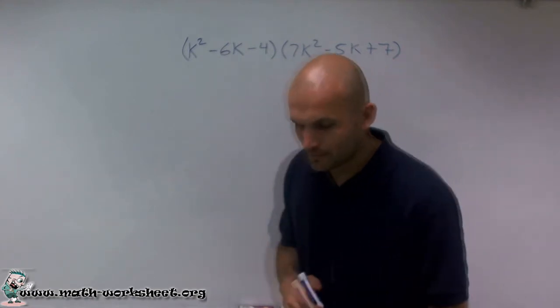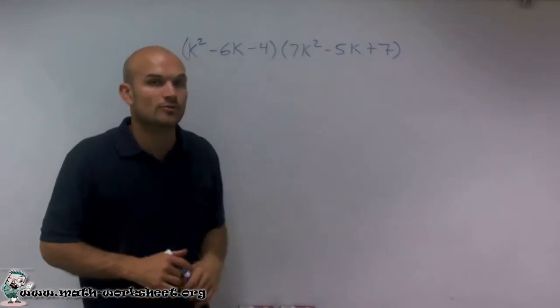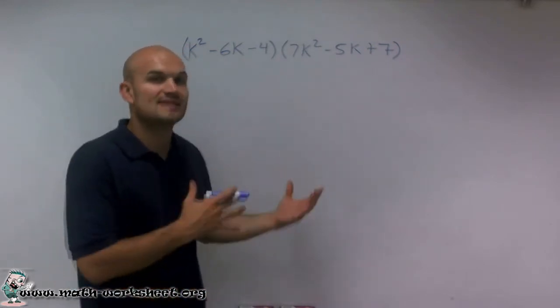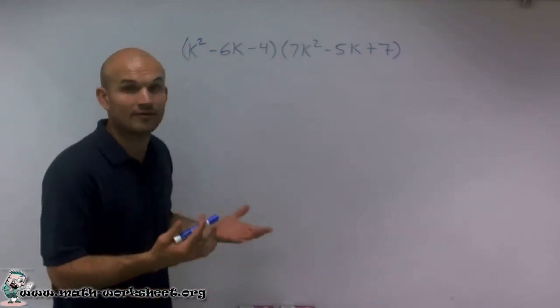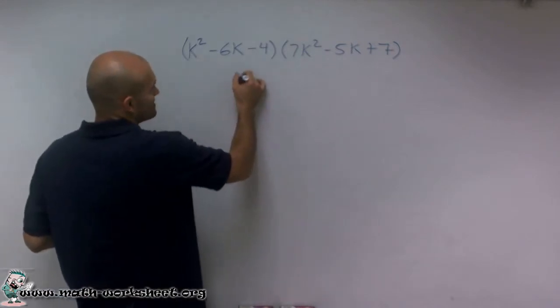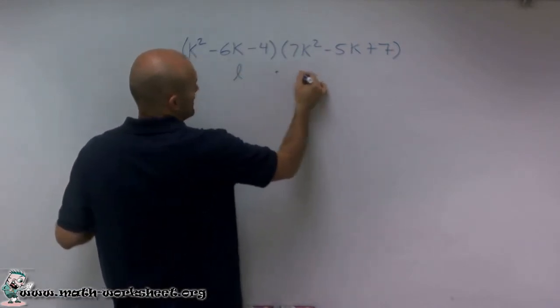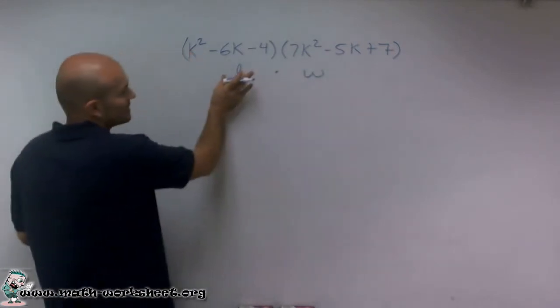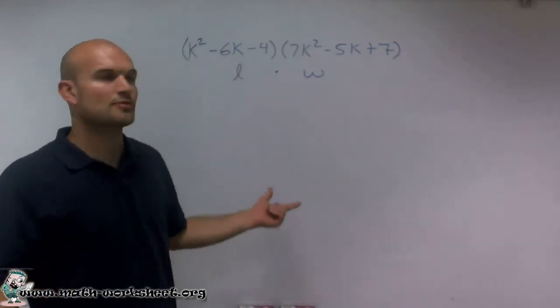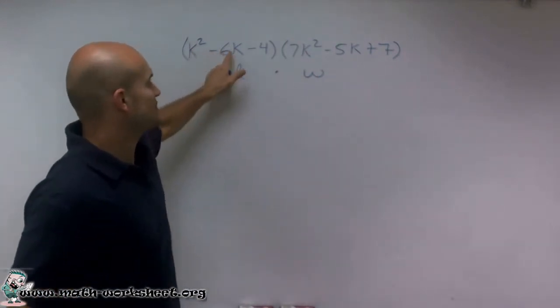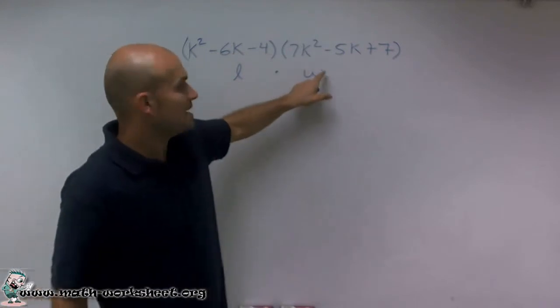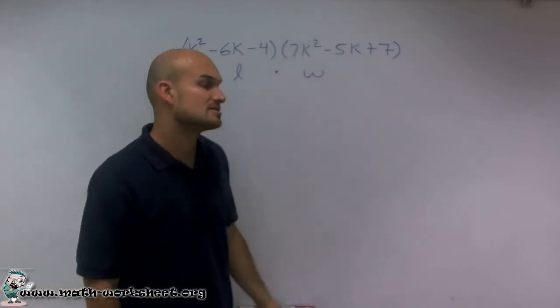So what I'm going to do is I'm going to use the multiplication of two trinomials, represent that as an area of a rectangle. And what is very similar to is I was just going to multiply a length times width, where the length, rather than being an integer like 3, it's going to represent k squared minus 6k minus 4. And my width will be 7k squared minus 5k plus 7.